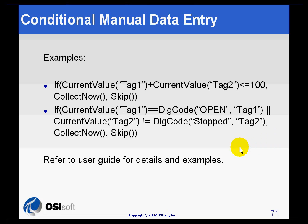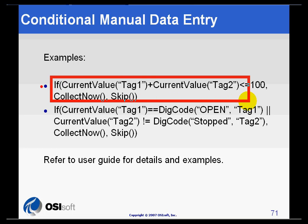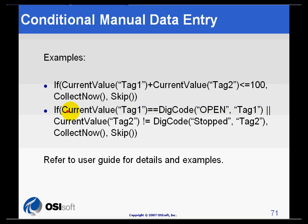In here we have two examples of Conditional Manual Data Entry. In the first one, we can see that if the current value of tag number 1 plus the current value of tag number 2 is less than or equal to 100, we will collect the data, otherwise we will skip it.